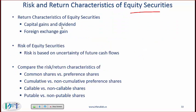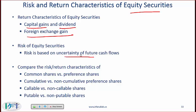Risk and return characteristics of equity securities. When you buy a stock you are looking for capital gains — the stock price may go up — and a dividend yield. A foreign exchange gain occurs when you invest in a foreign company's stock and that country's currency appreciates. Risk is based on the uncertainty of future cash flows; for example, if you buy a stock expecting a dividend, there is a risk that dividend will not be paid.